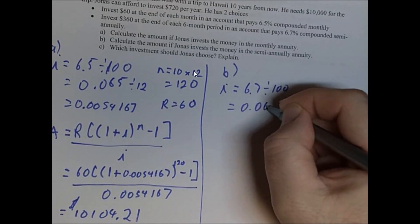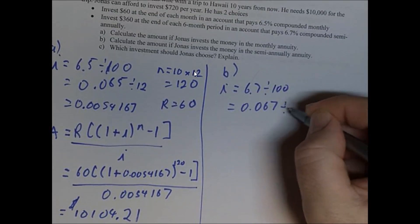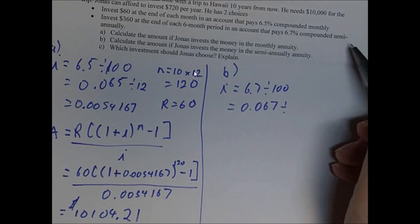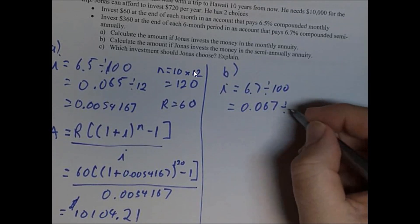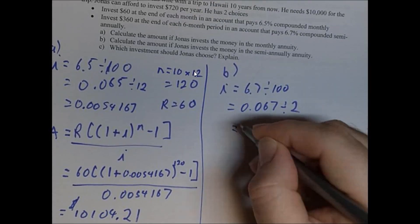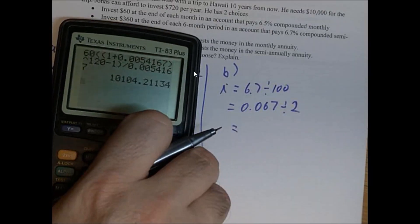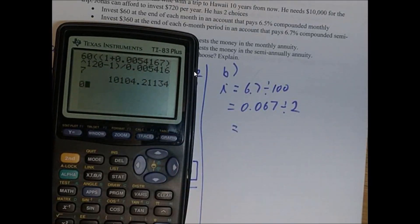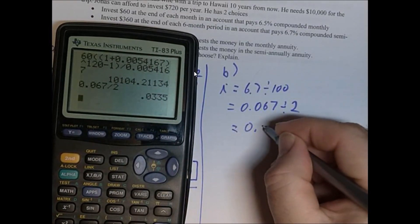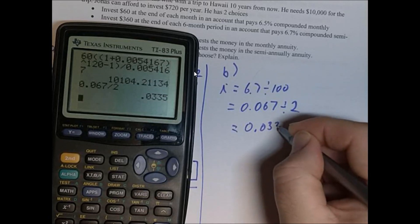So you get 0.067. And then divide that by, this one's compounded semi-annually. So twice a year. So we divide it by two. So you get, I'm going to use my calculator here. 0.067 divided by two equals 0.0335.